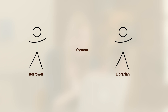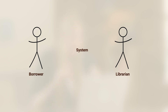So here on the left I'm going to draw a stick figure for the borrower, and on the right-hand side I'll put a stick figure for the librarian. In the middle I put the system, this big empty rectangle. It's the middle ground across which the actors interact, and the system you're probably building if you're the developer on the project. We delineate the system with a border and the name of the use case inside.